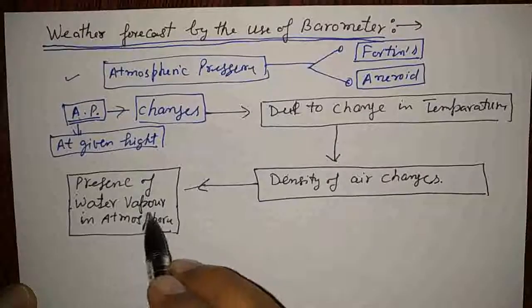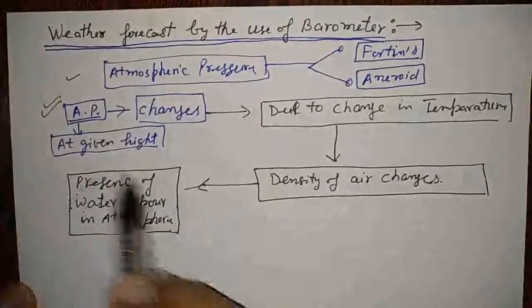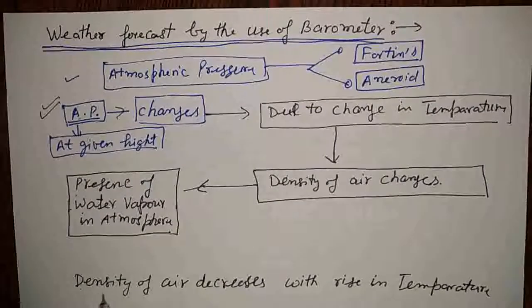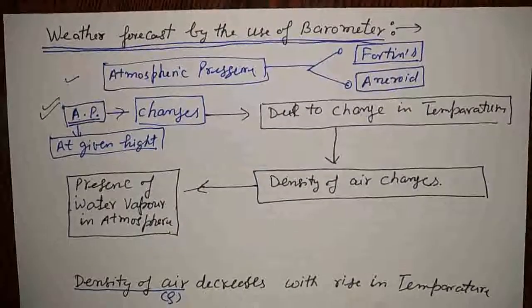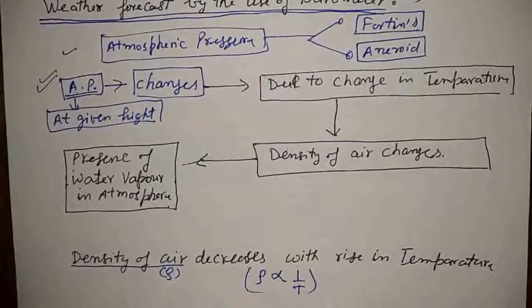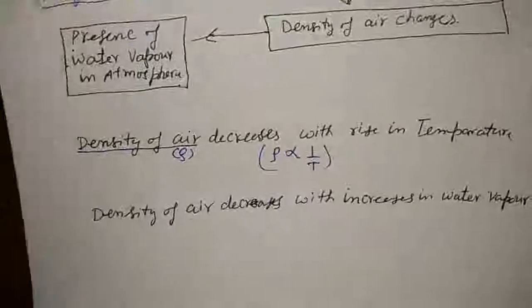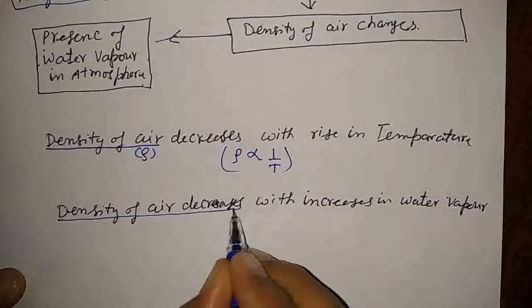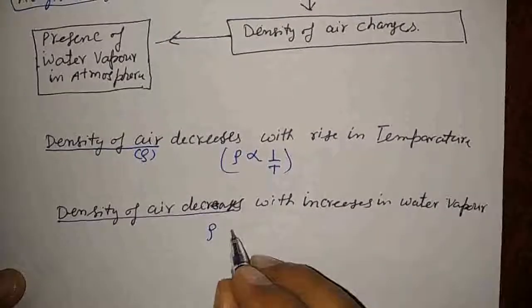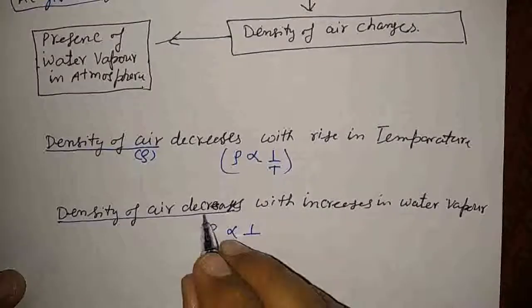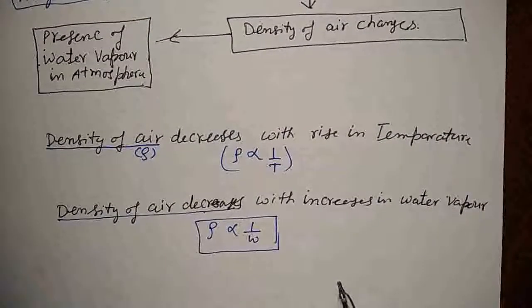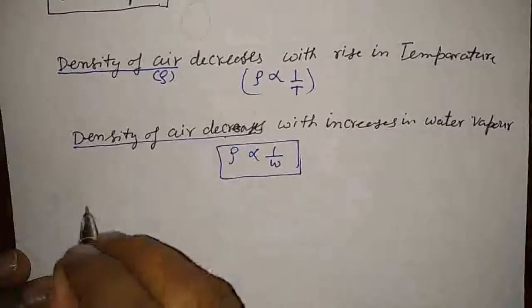As a result, atmospheric pressure changes. Density of air, denoted by rho, decreases with rise in temperature — so it is inversely proportional to temperature. One more thing: density of air (rho) also decreases with increase in the water vapor component. If water vapor component is denoted by w, then density is inversely proportional to the water vapor component available in the atmosphere.